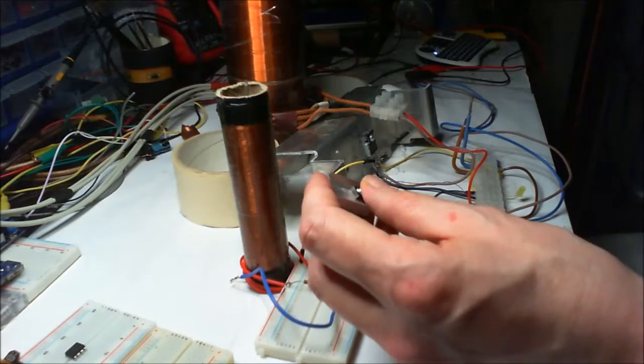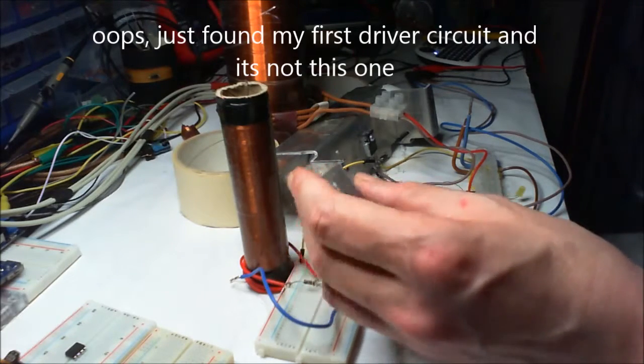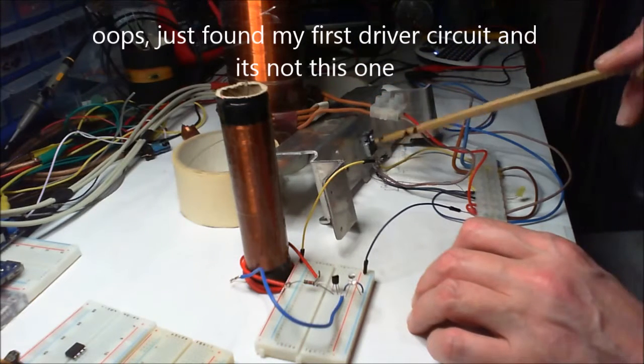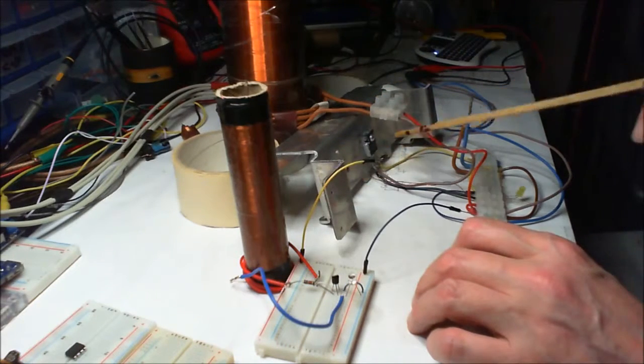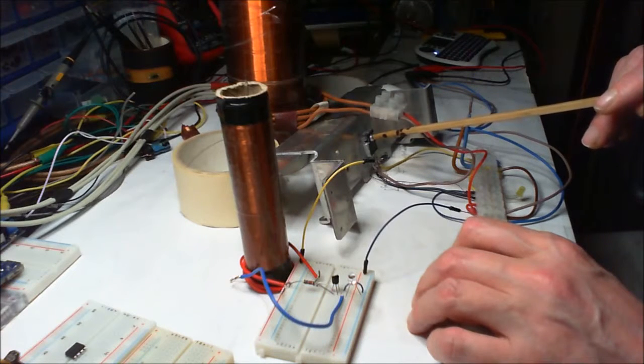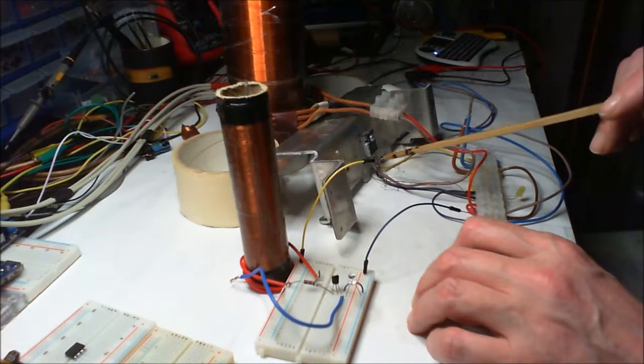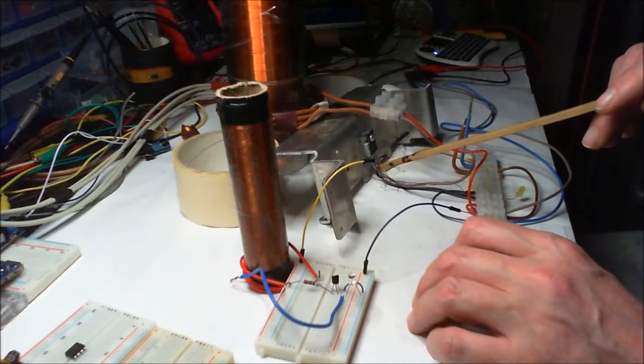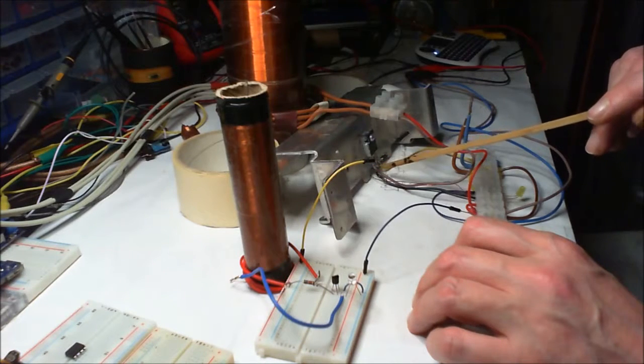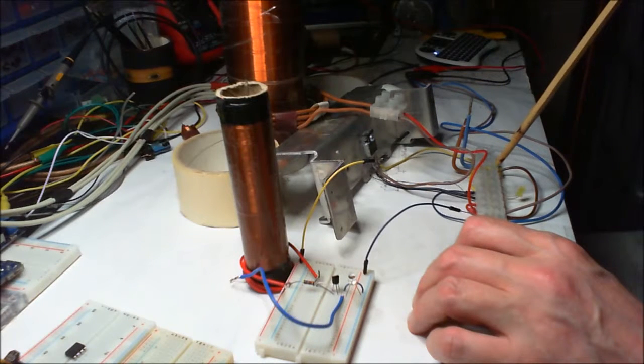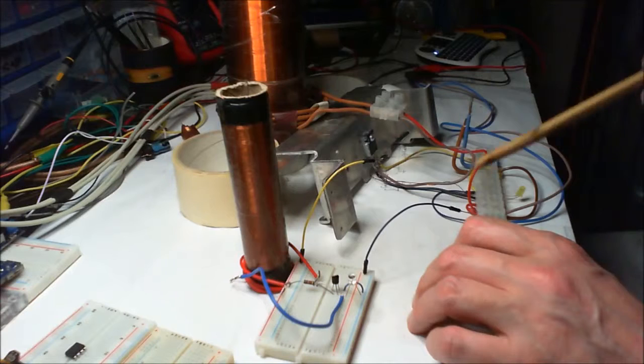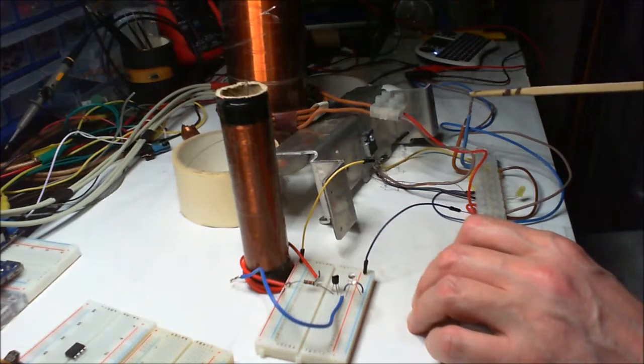And that's this one here. This one uses a TIP 35c and you can get 5 amps on the base, 5 volts across the collector. It's exactly the same as this, absolutely no difference. The difference I've got here...